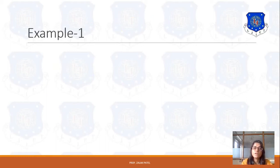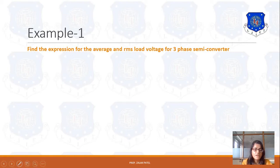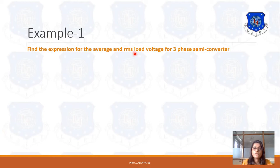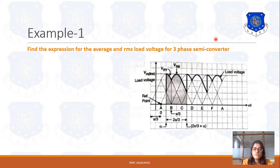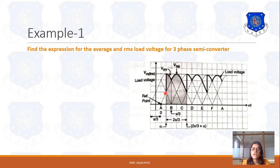As we discussed about the operation of the semi-converter as a 6-phase operation, based on it, let's discuss one example. The problem statement is: find the expression for average and RMS load voltage for a 3-phase semi-converter. For this, you have to consider this figure, and in the figure you can see that you have to find out the average and RMS voltage for the shaded portion, which is Vry and Vrb.